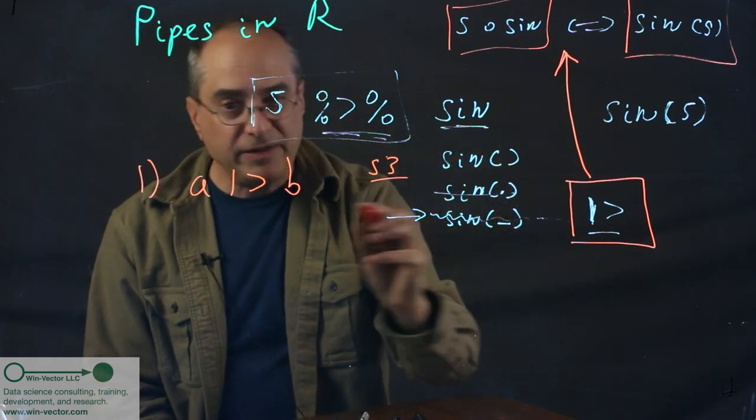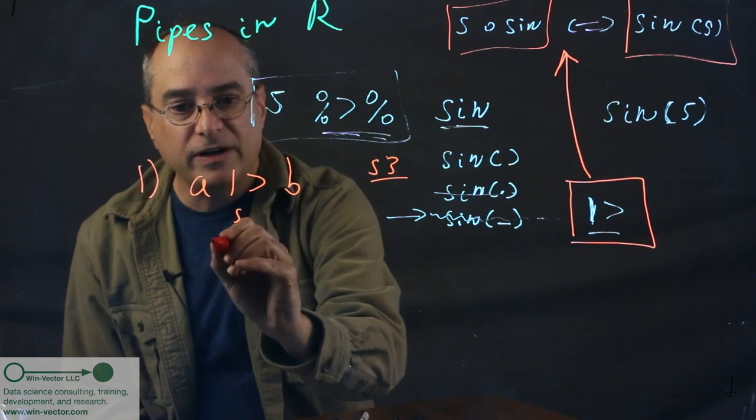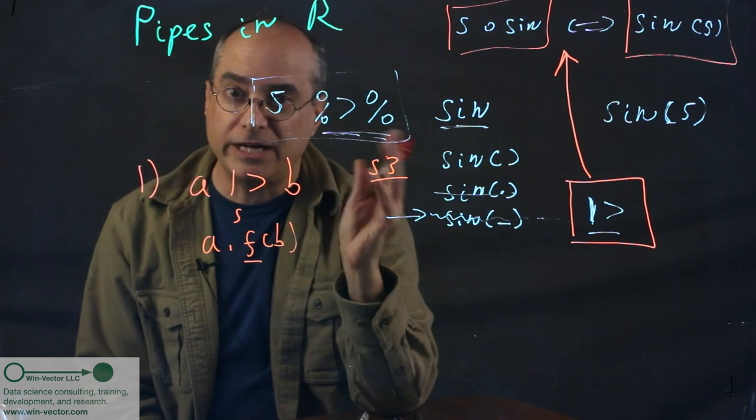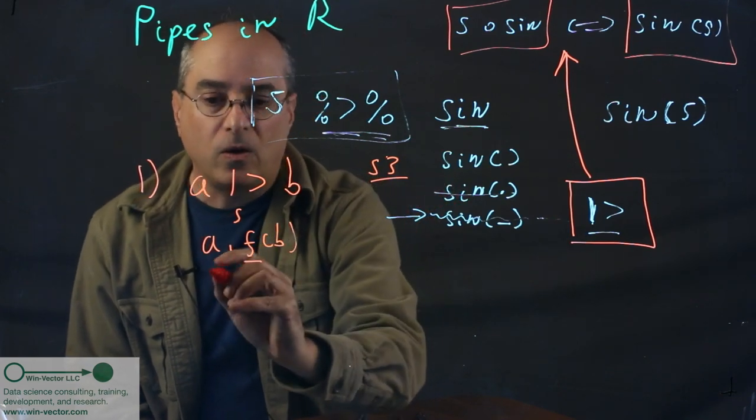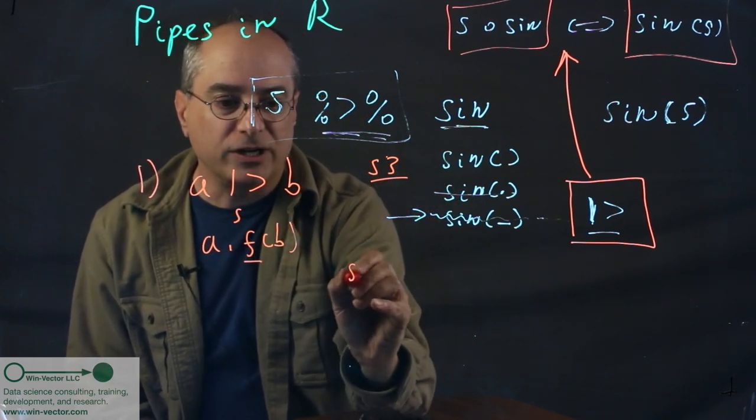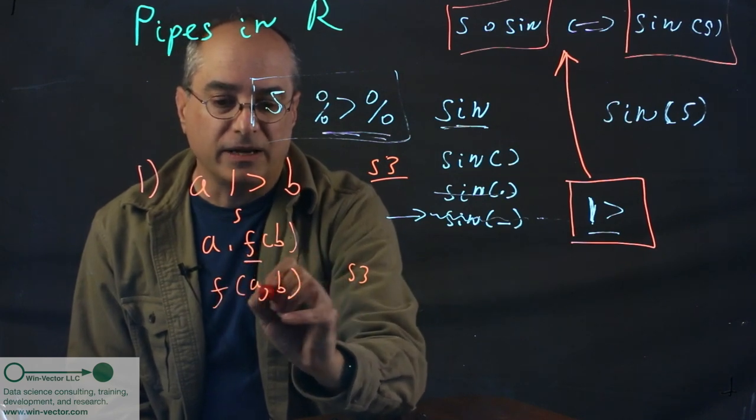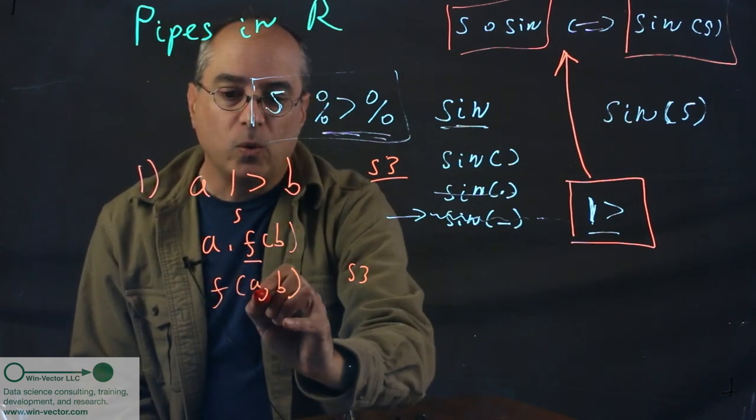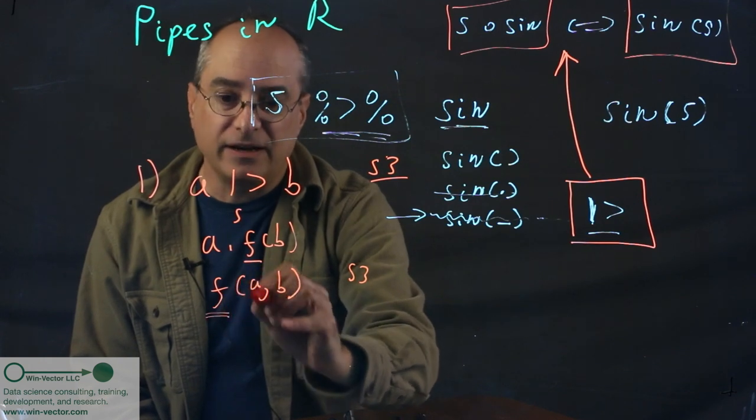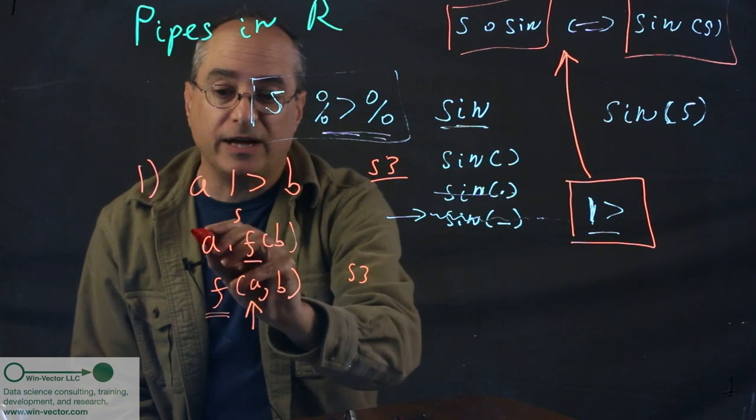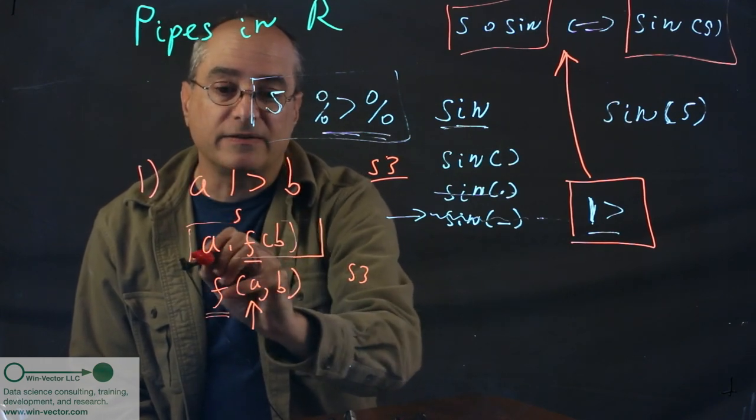But basically, this is shorthand for A.F of B, where F is some canonical function name nobody needs to know about, or in S3 notation, F of A, B. Because in S3, what F you've gotten depends on the class, the runtime class of this object, which in an object-oriented system, we would write like this.